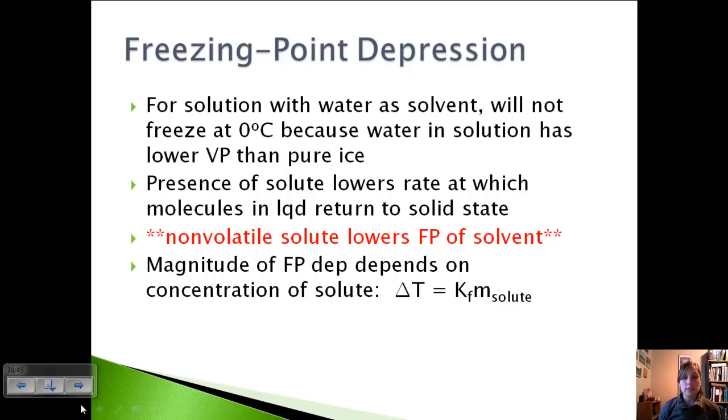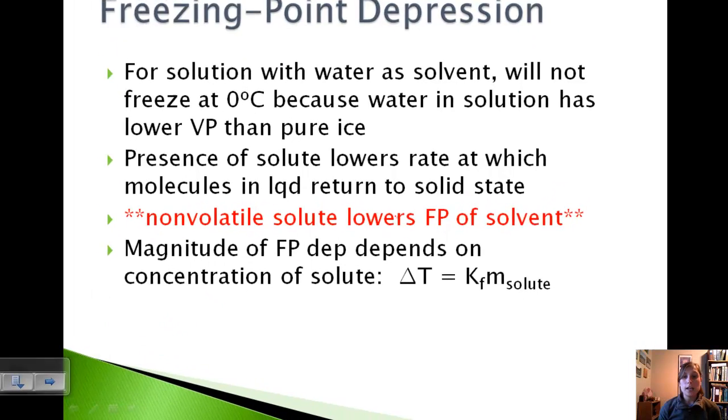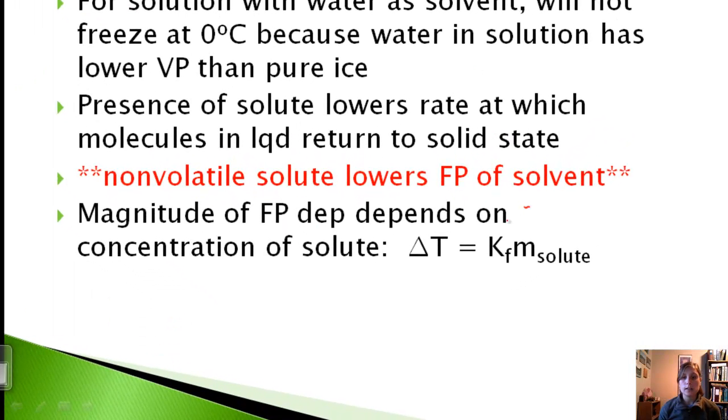Just like boiling point elevation, the magnitude that we lower this freezing point depends on the concentration of the solute. Here again, we've got our temperature. Now instead of K sub B, we've got K sub F, and again, our molality, moles of solute per kilogram of solvent. That's how we would calculate that.